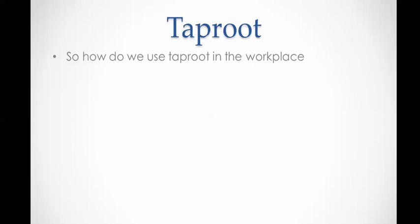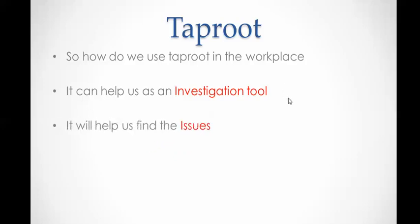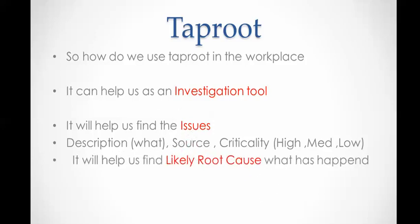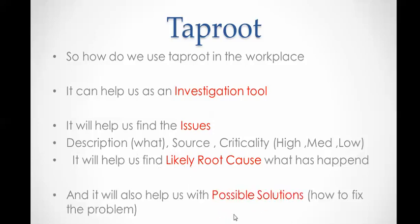So how do we use Taproot in the workplace? It can help us as an investigation tool, and also help us find out any issues that may arise. You can categorize them with descriptions, source, criticality, and rating — high, medium, or low. You can also use a hierarchy of controls. It helps us find the likely cause — what has really happened and why something actually failed — and it will also help us identify possible solutions to fix the problem.